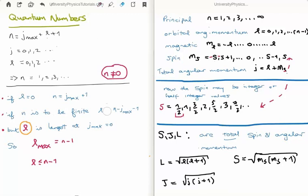So L is largest at J max is equal to 0. Now, by the way, in video 38, I actually had that N is largest at J max is equal to 0, which is clearly incorrect. So what this implies is that L max is in actual fact N minus 1, or L must be between 0 and N minus 1. So now what we've found is that the principal quantum number N goes from 1 to infinity in integer steps, but also that the orbital angular momentum quantum number L goes from 0 to N minus 1 in integer steps.